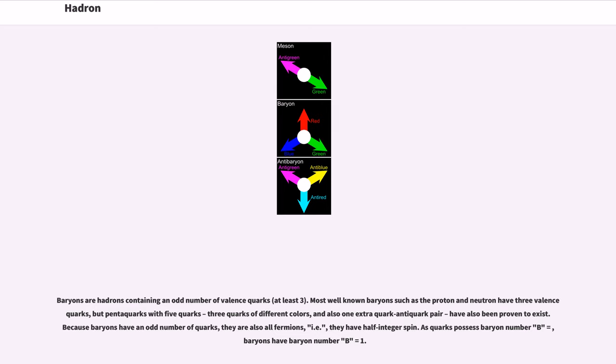Baryons are hadrons containing an odd number of valence quarks (at least three). Most well-known baryons such as the proton and neutron have three valence quarks, but pentaquarks with five quarks (three quarks of different colors plus one extra quark-antiquark pair) have also been proven to exist. Because baryons have an odd number of quarks, they are all fermions (i.e., they have half-integer spin). As quarks have B = 1/3, baryons have B = 1.